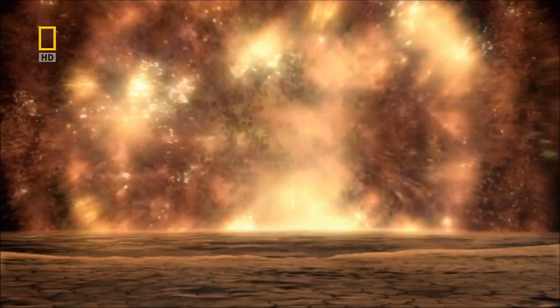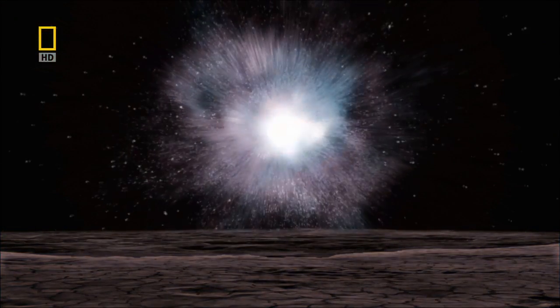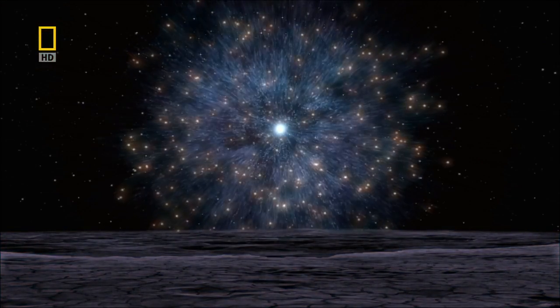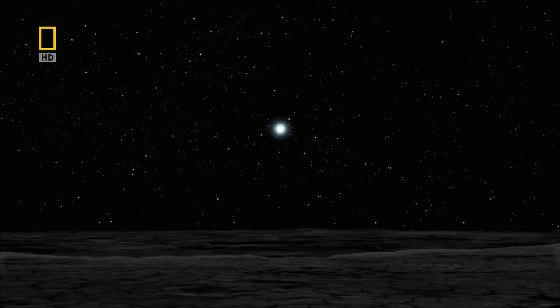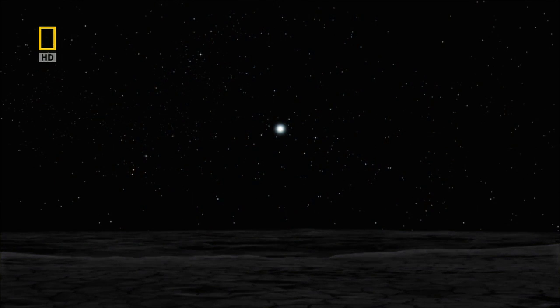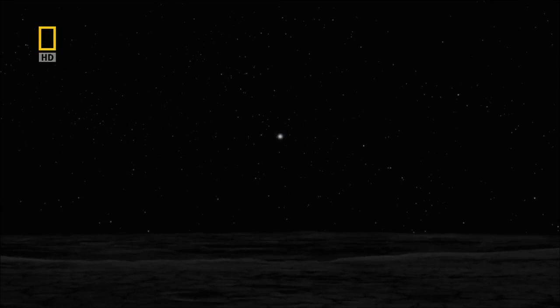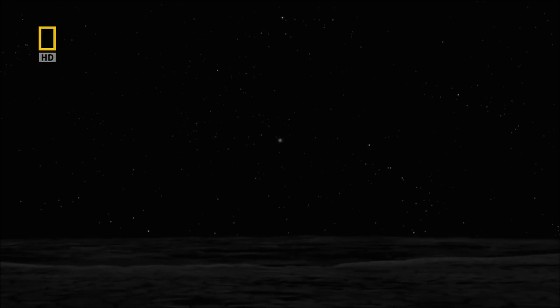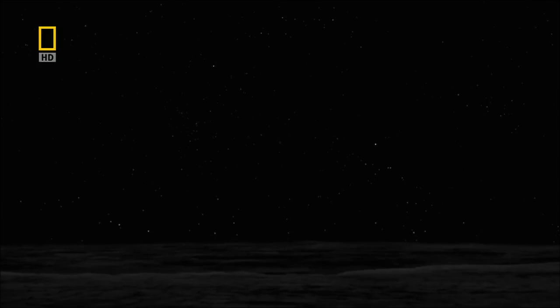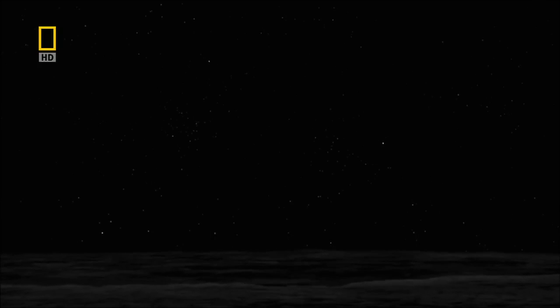The sun dies, shrinking to a white dwarf. Neighboring stars are dying too, being replaced by white dwarves, pulsars, black holes. The lights are going down on the galaxy. Since the Big Bang, the universe has been fading, dying. Not with a bang, but with a long drawn out whimper.